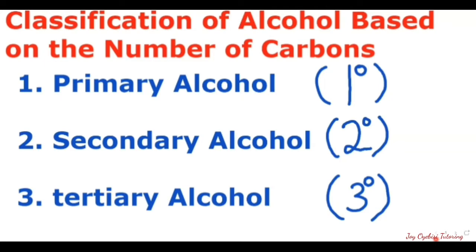The first classification is based on the number of carbons. We have the primary alcohols, and primary alcohol is represented as one degree. The secondary alcohol is represented as two degrees, and the tertiary alcohol is represented as three degrees.